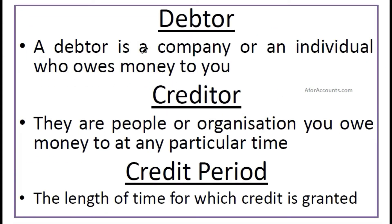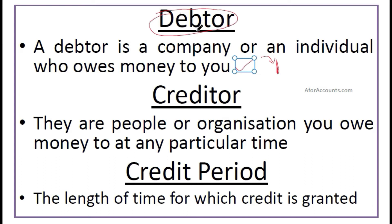So who's a debtor? A debtor is a company or an individual who owes money to you. If your company has to take money from someone — like if he has got money from you and left — so he's your debtor. A debtor is a company or an individual who owes money to you or your company.